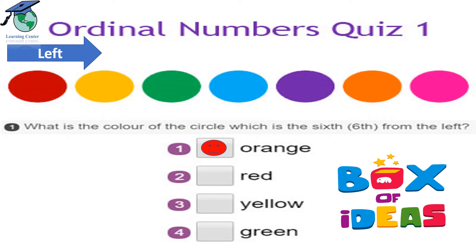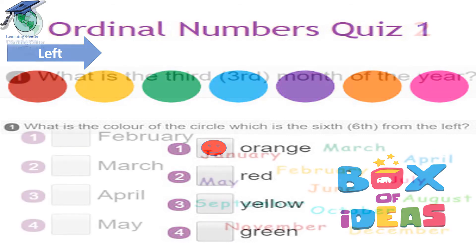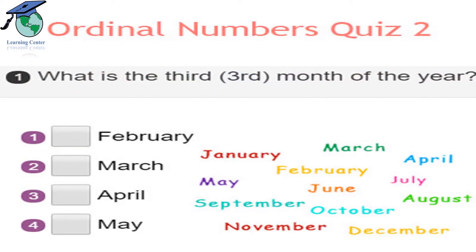Let us go to the next question: what is the third month of the year? The third month of the year is March. After January it is February, and after February it is March. So March is the third month of the year.